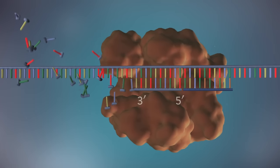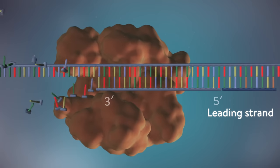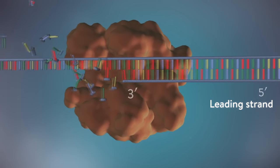One of the new strands of DNA, the leading strand, is made continuously, the DNA polymerase adding bases one by one in the five prime to three prime direction.